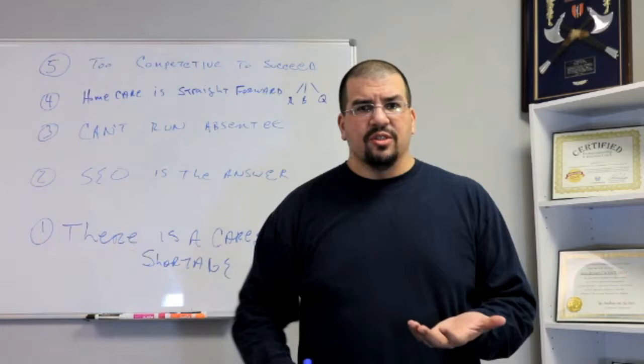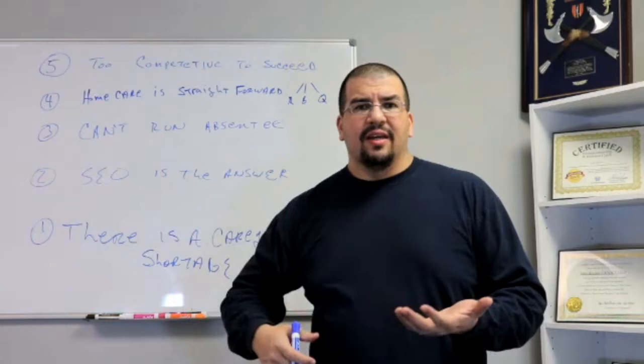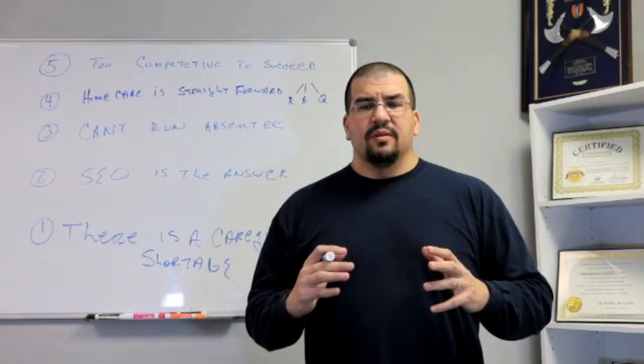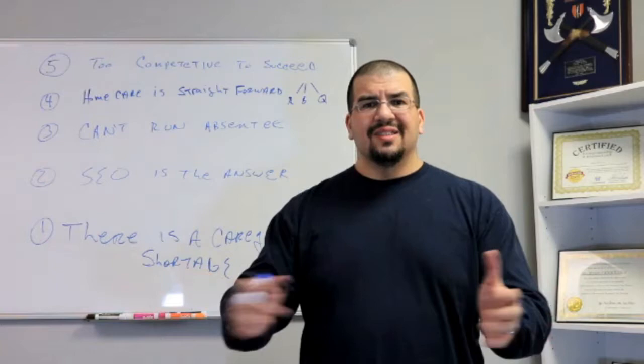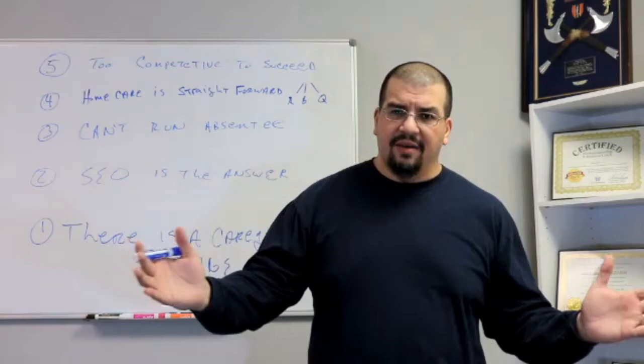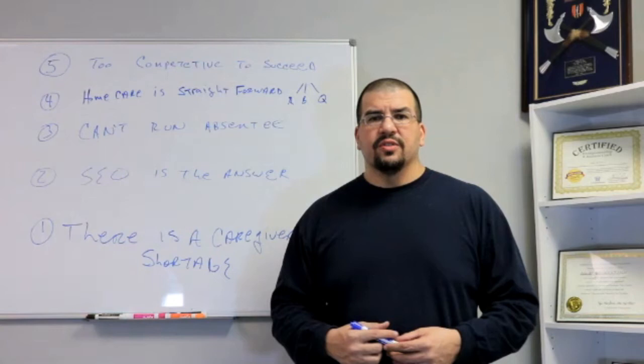That 300,000 population is going to have anywhere from 8 to 15% on average of people in that ideal age group. So let's work with 10%. That means in your area, there are about on average 30,000 people that need your services.